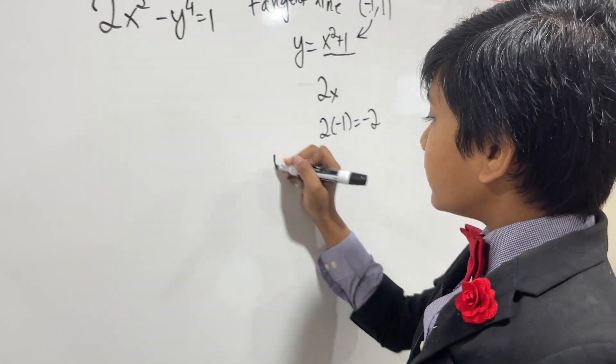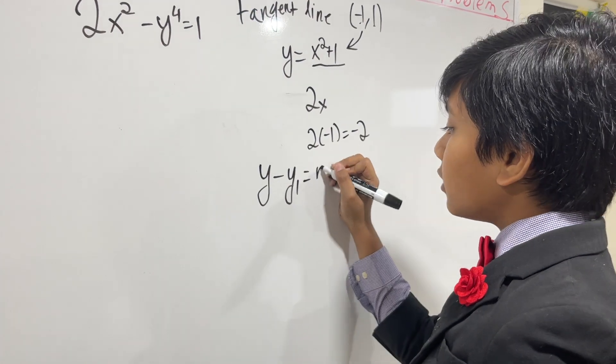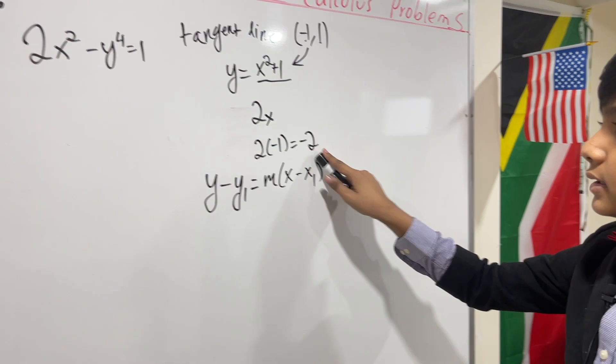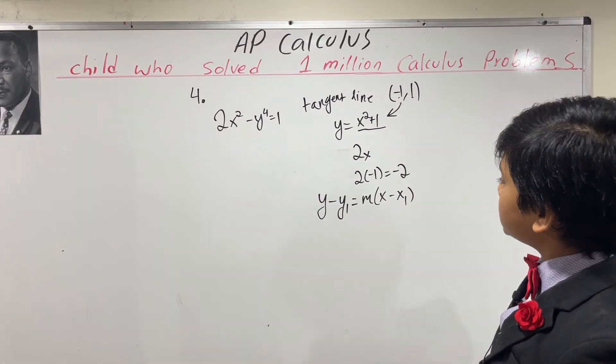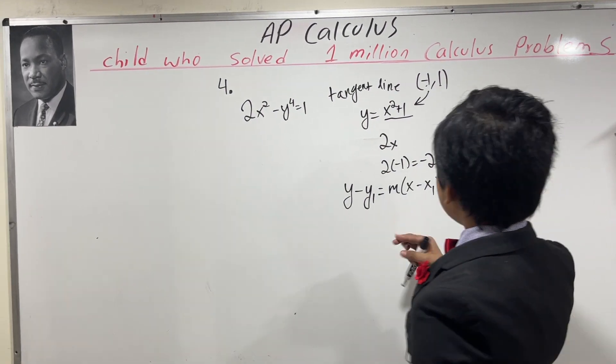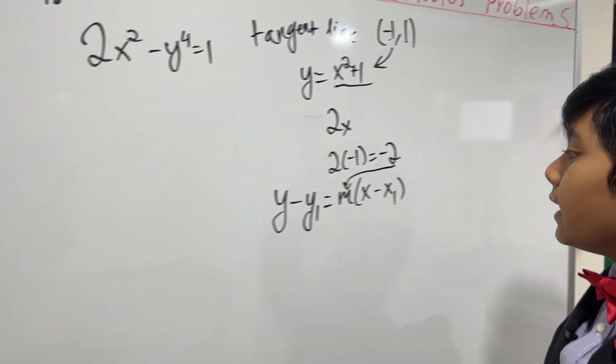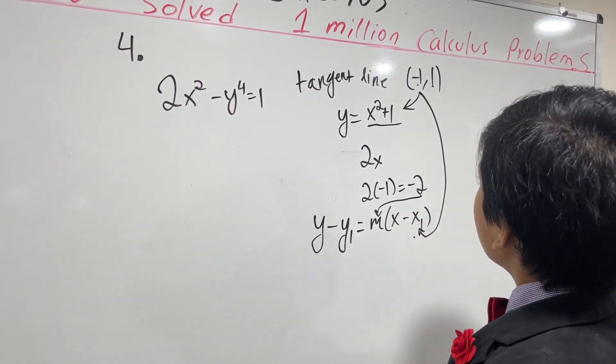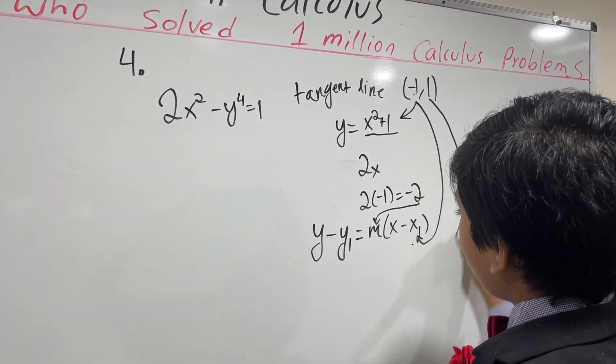Then, we use our old friend from Algebra 1: y minus y1 is equal to m times x minus x1. Now, this minus 2 represents the slope at the particular x that we chose, so that means it goes into the m. Then, this x1, we just need to plug in our x-coordinate, and for y1, we need to plug in our y-coordinate.